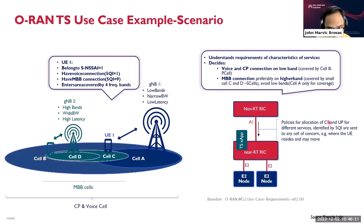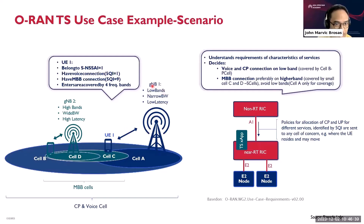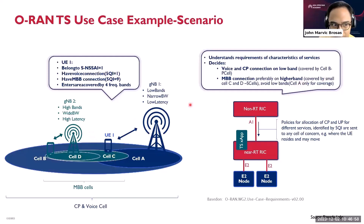Policies for allocation of control plane and user plane for different services, identified by 5QI, are sent to any cell of concern. You can see here the UE and how it decides. If you're doing voice, you need low band, so you go to GNB1. GNB is our term for the 5G site. You have low band there, so you go to low band. But if you're using an MBB connection — if you suddenly need data — you need high band, as stated in the policy, so you go to the GNB using high band. Because one site can have different bands.